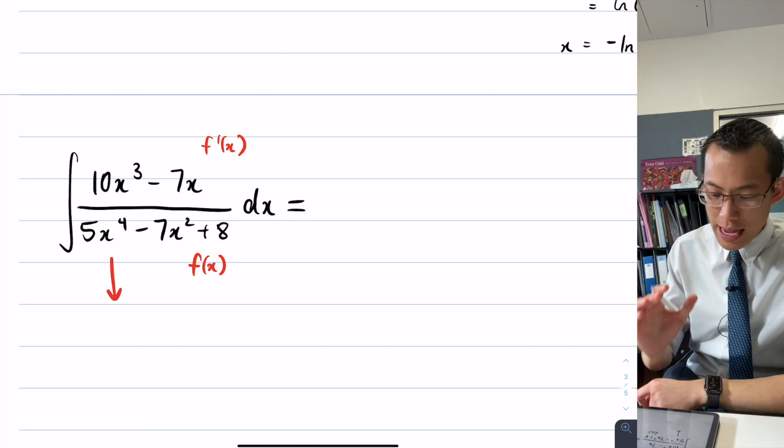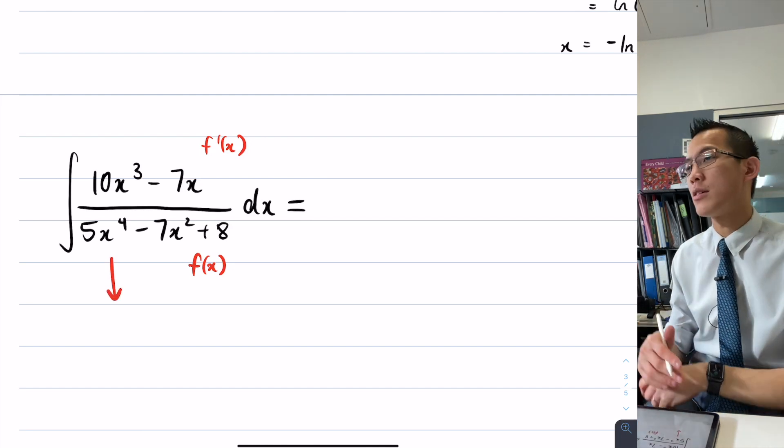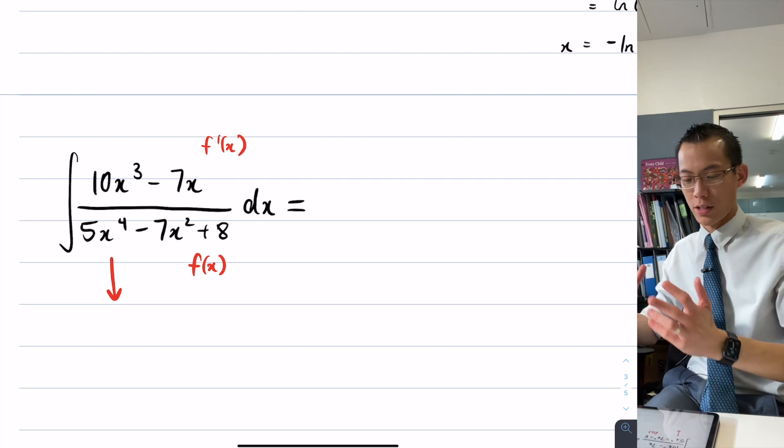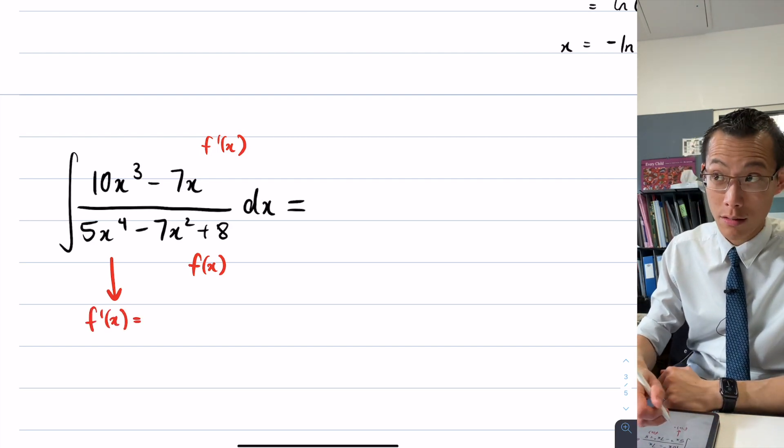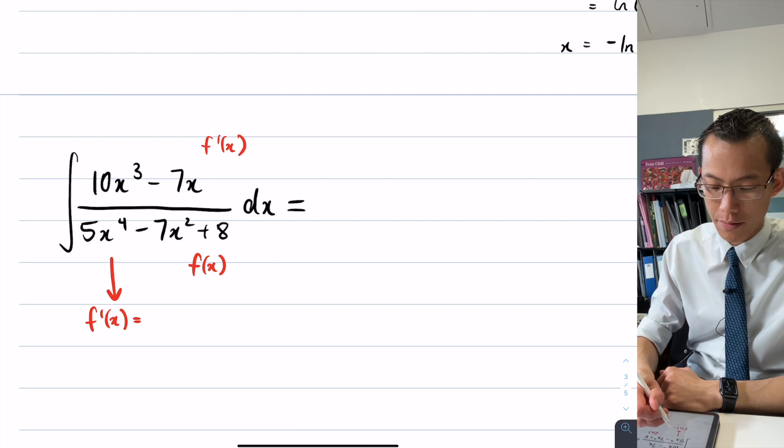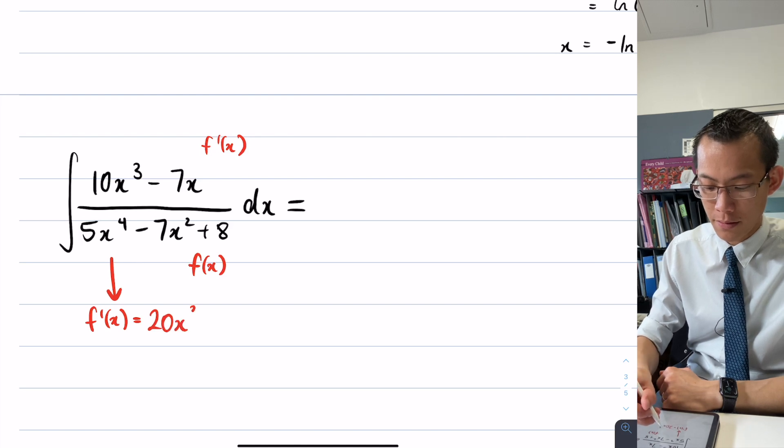Where does that come from? And the answer is if f of x really is 5x to the 4 minus 7x squared plus 8, then f dash should be what? What should it be? Of the denominator. 20x to the power of 3, and minus 14x. Plus 8? That is gone, right, because you differentiate it and it disappeared.